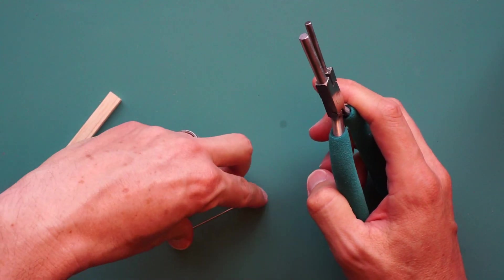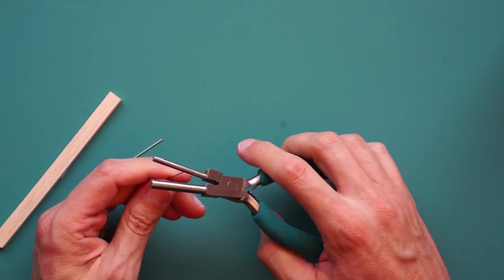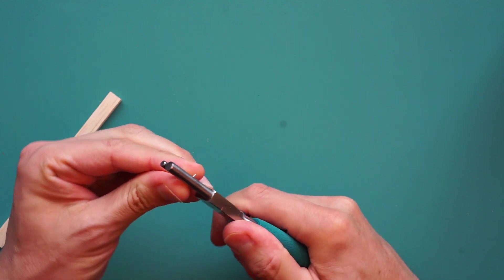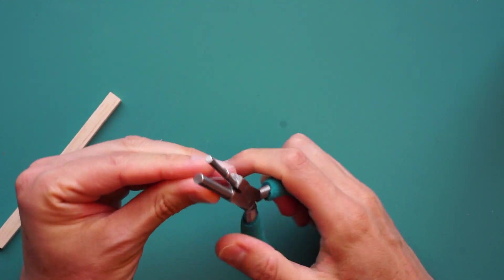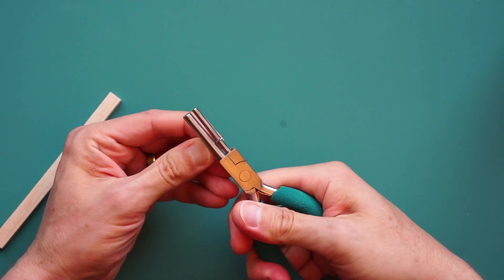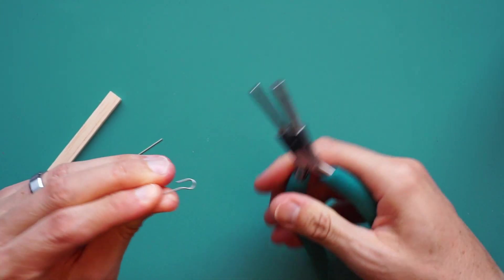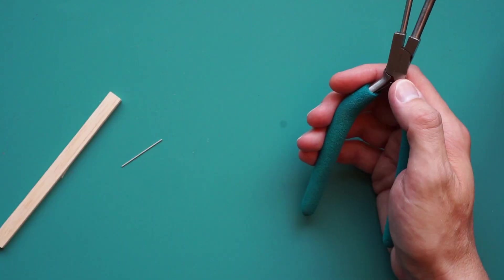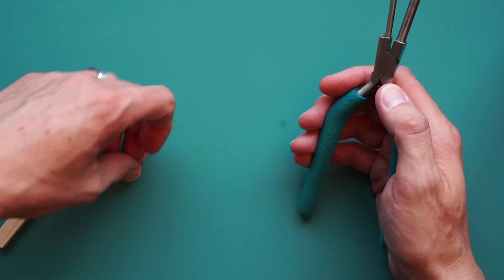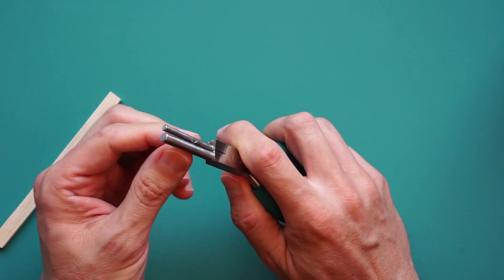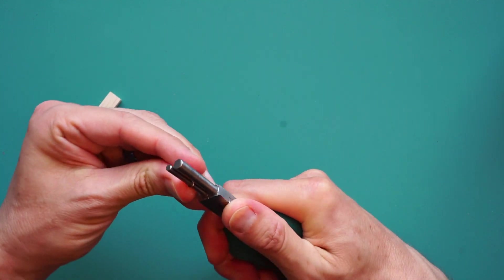First, we're going to make the hooks that hold the rubber band. This one is the back of the crank piece. We'll do the rest of it later. Now making the hook that holds the back of the rubber band.